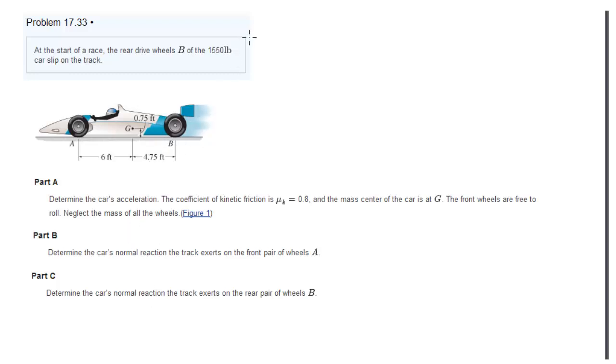So they ask us to determine (a) the acceleration, (b) and (c) the reaction forces at the wheels, which is the normal force. First let's put what we're given. We're given the mass of the car which is 1550 pounds, and we're also giving the coefficient of friction with the rubber on the floor which is 0.8.